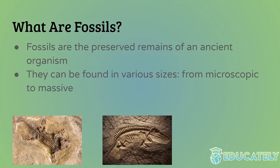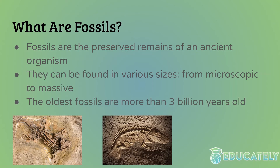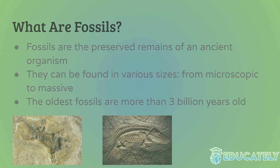Fossils can be found in various sizes, from microscopic to massive. A lot of people think of these gigantic rocks of enormous creatures when they think of fossils. But they can be microscopic also. The first life forms that originated 3.5 billion years ago weren't obviously big — they were microscopic unicellular organisms that were not very complex. The oldest fossils are more than 3 billion years old, which just shows you how long life has been around on this planet.